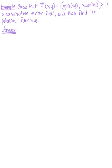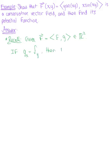Show that the vector field is a conservative vector field and then find its potential function if it exists. We want to recall that if we are given a vector field F defined by components F and G in R2, then we have our conservative vector field test: if the partial derivative of G with respect to X equals the partial derivative of F with respect to Y, then F is a conservative vector field — or in other words, we can rewrite F as the gradient of a potential function phi.